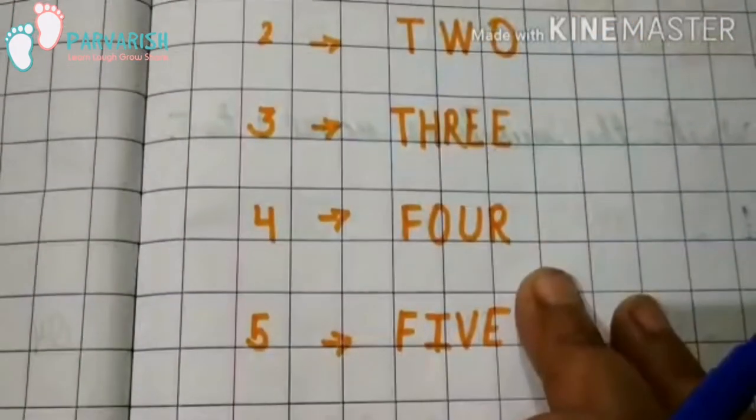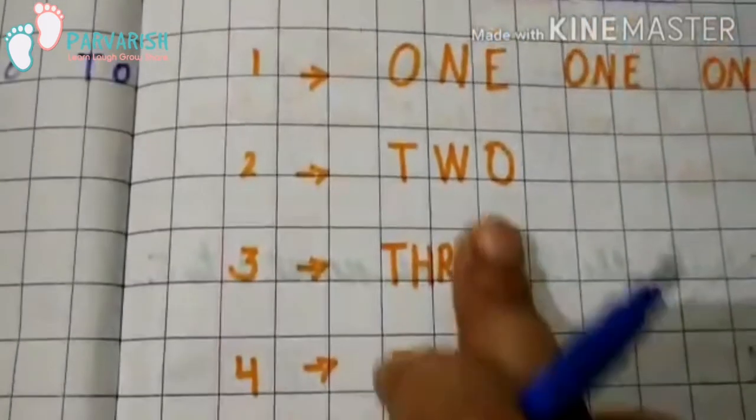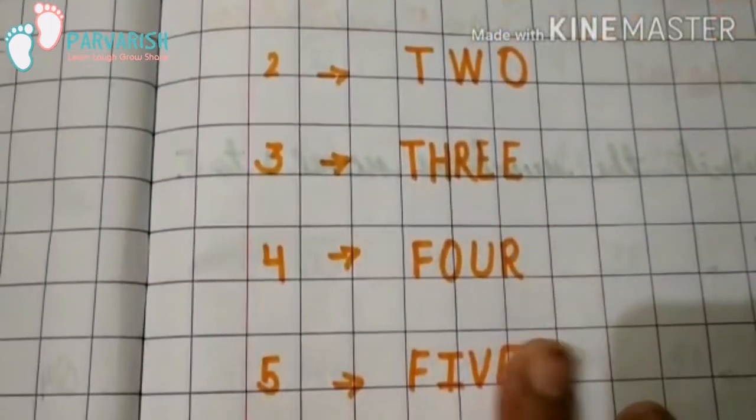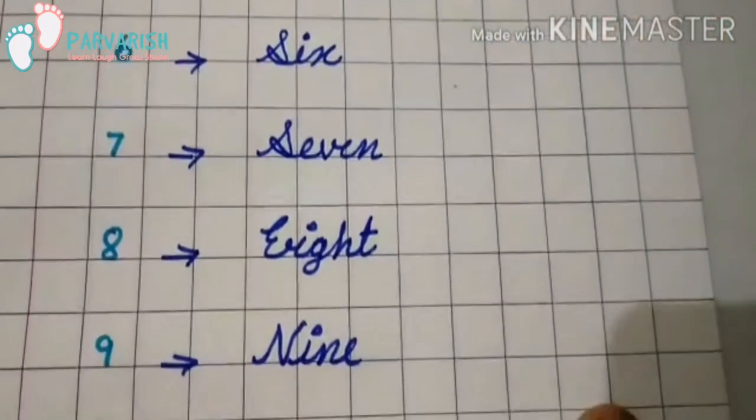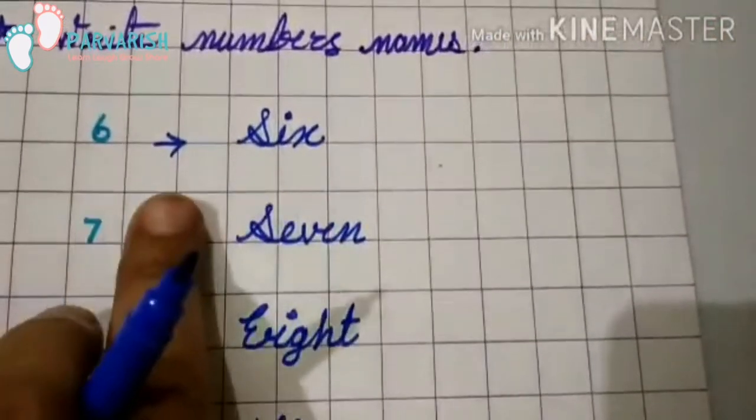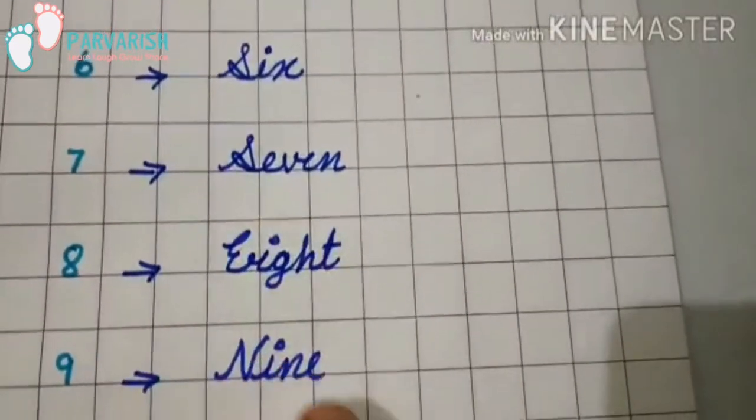3, 4, 5. 1 to 5 numbers names and 6 to 10: 6, 7, 8, 9, 10.